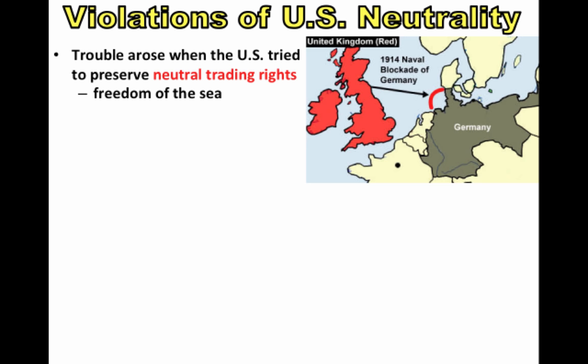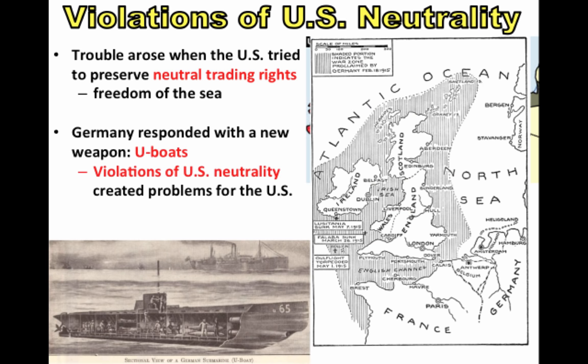Things got even more tense when Germany responded with a new weapon of war: u-boats. There started to be consistent violations of US neutrality, which created problems for the United States. All of the area shown on the map was declared a war zone by Germany, and they were using their u-boats to sink any ships trying to trade with England.